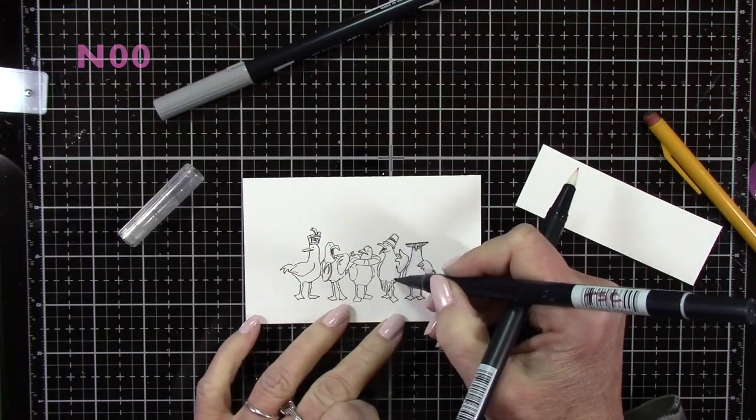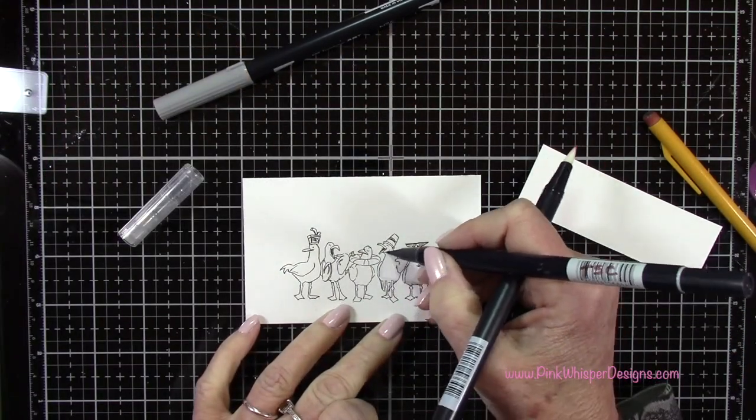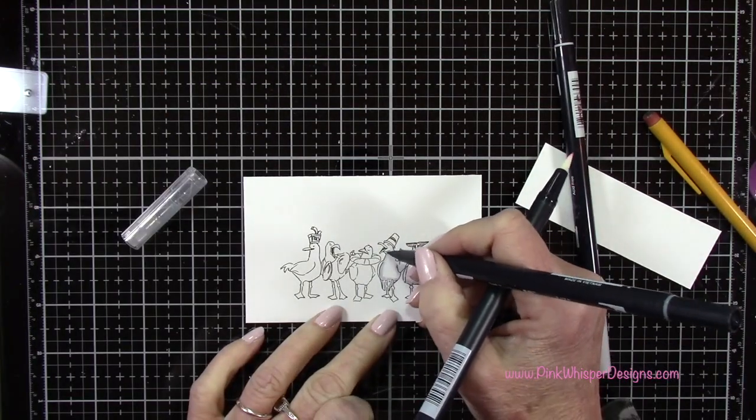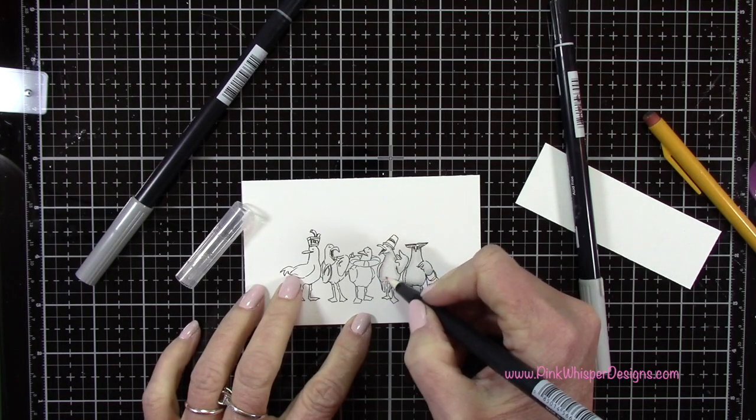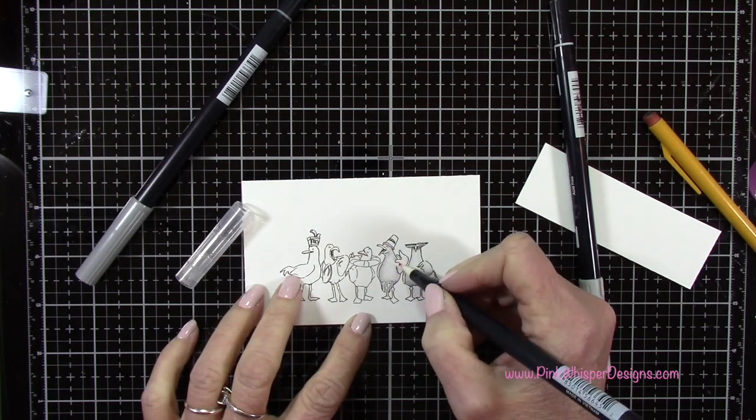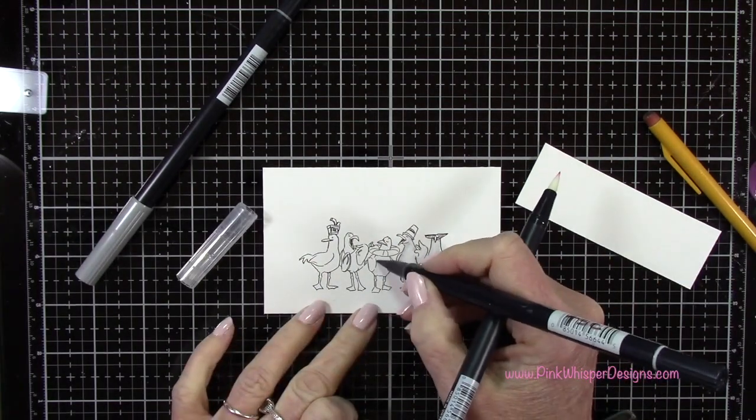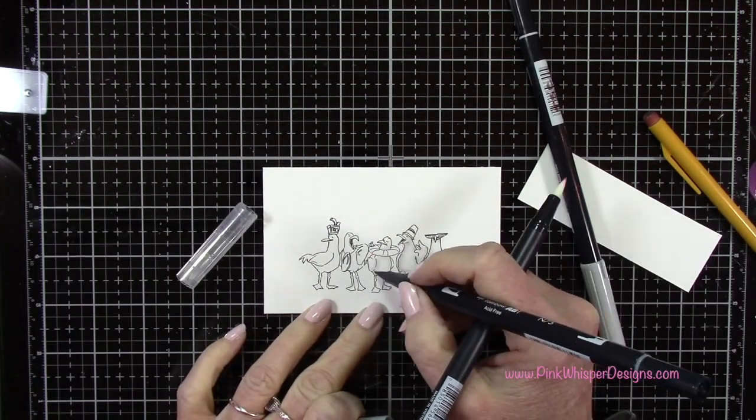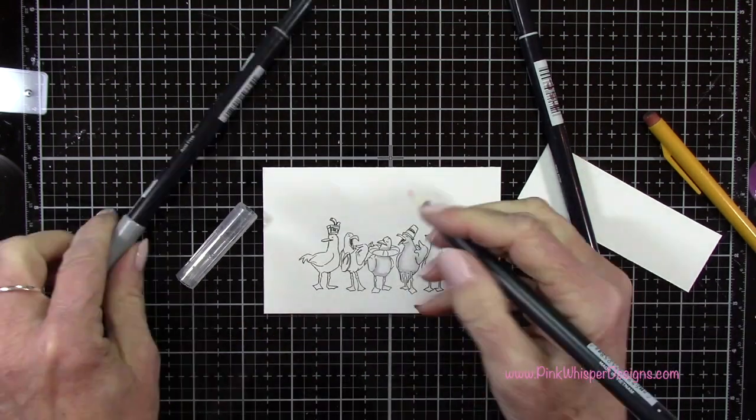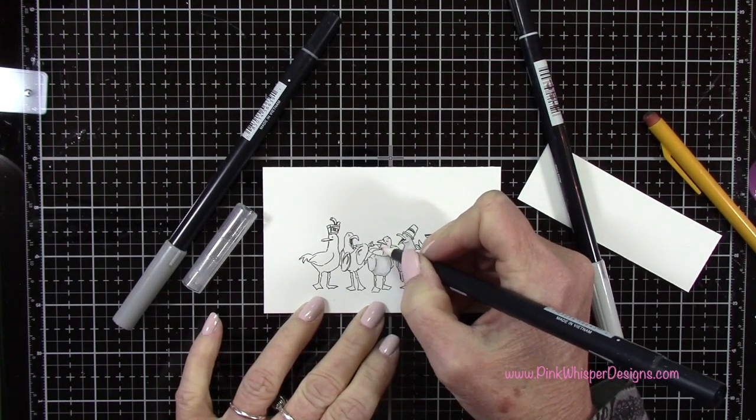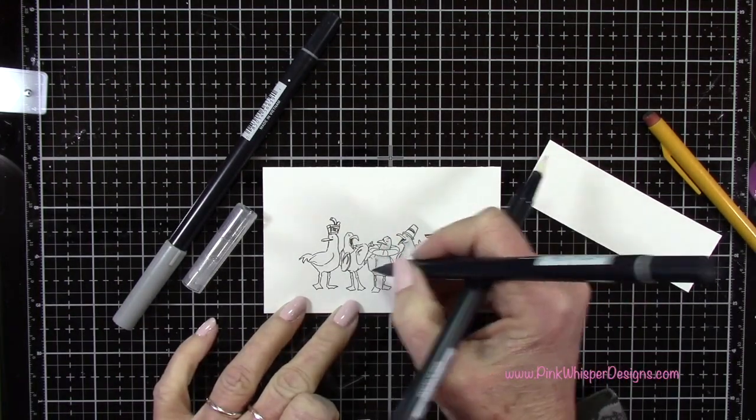I'm going to start with my lightest color of gray, then add the darker tone and just pull that in towards the middle with this blender pen. To clean off your blender pen you just want to scribble it onto some scrap paper until it goes clear, then you'll know it's clean to go to your next color. I'll just continue coloring all of these in. These little images are just so cute. I love this little grouping of seagulls.